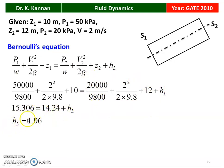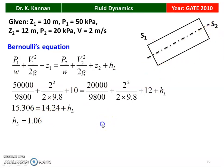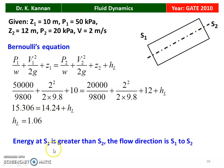So, head loss H_L = 1.06 meter. The energy at S1 is 15.306 and energy at S2 is 14.24. Since energy at S1 is higher than energy at S2, the flow direction is from S1 to S2. Therefore, flow is from S1 to S2 and the head loss is 1.06 meter.